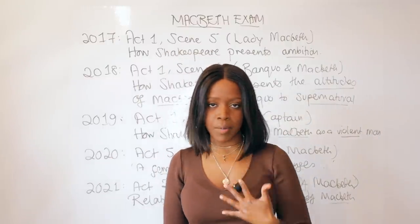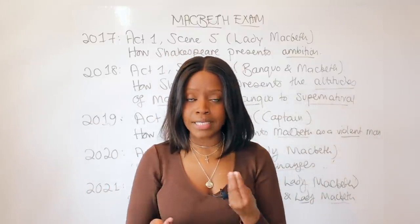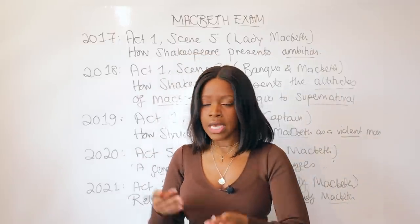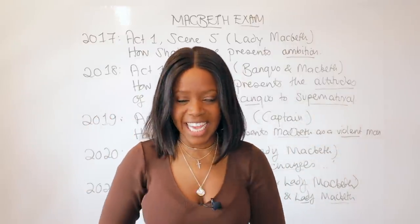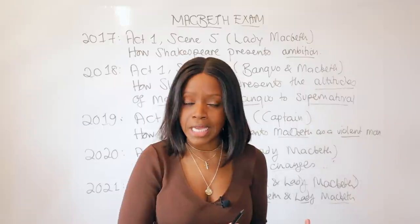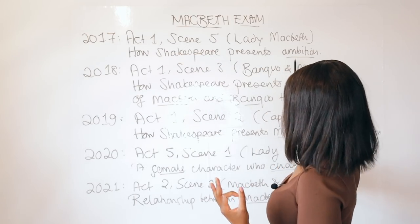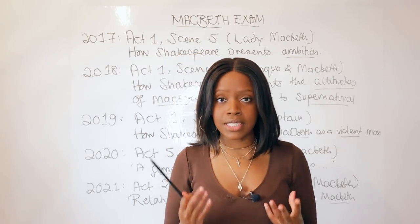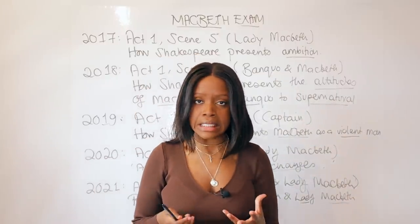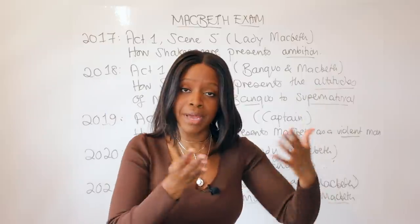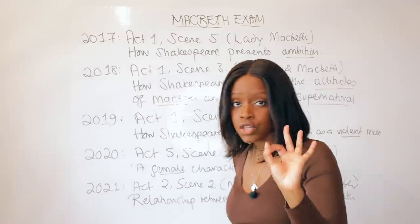The 2017 question asked how Shakespeare presents ambition. When talking about elsewhere in the play, you can relate this to Macbeth becoming ambitious because the witches plant seeds of ambition in his mind. You can contrast him with Banquo or Macduff — Macduff kills Macbeth but hands the crown back to Malcolm, showing he's not ambitious. Banquo hears the same prophecy but never acts on it, never develops ambition.